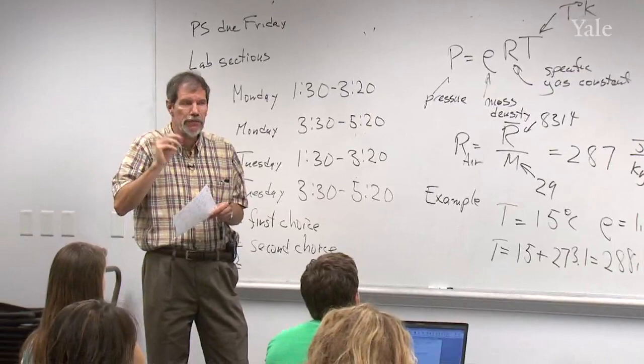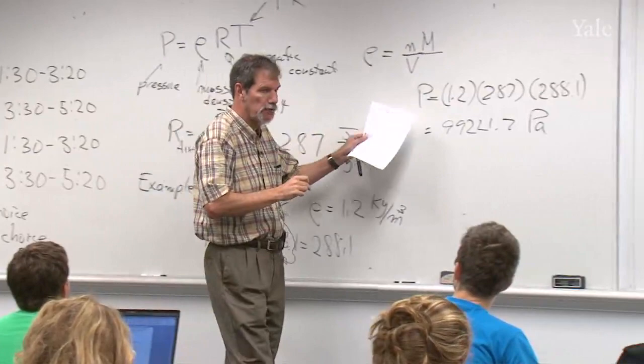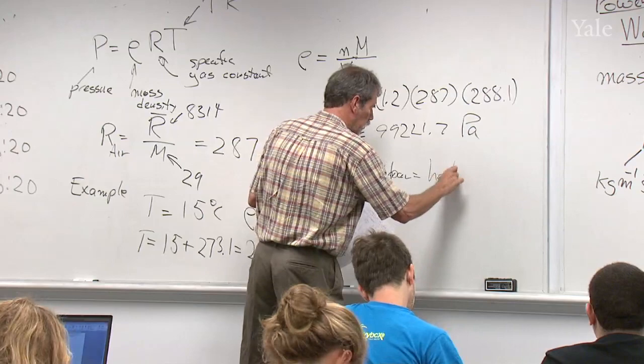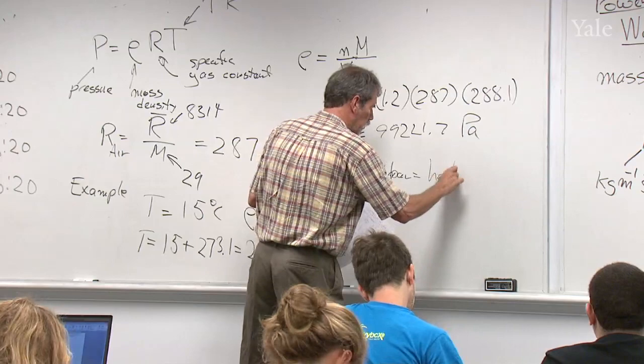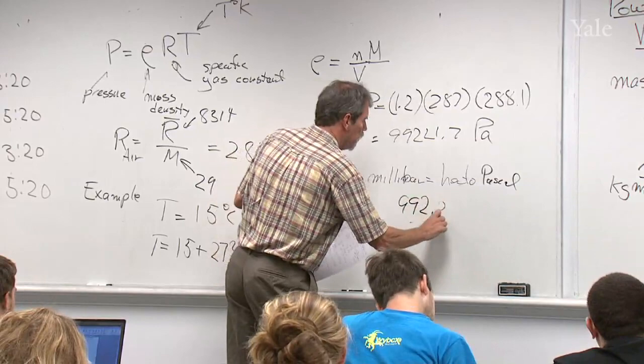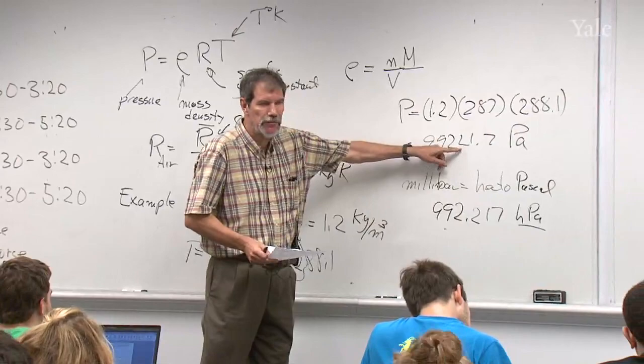For pressure, you should express it in Pascals. A more frequent unit in meteorology is the millibar, sometimes written as a hectopascal, which is 1/100 of a Pascal — wait, actually 100 Pascals. So 99,222 Pascals becomes 992.22 hectopascals. In the meteorological literature, hectopascals are often used instead of Pascals; just divide or multiply by 100 to convert.